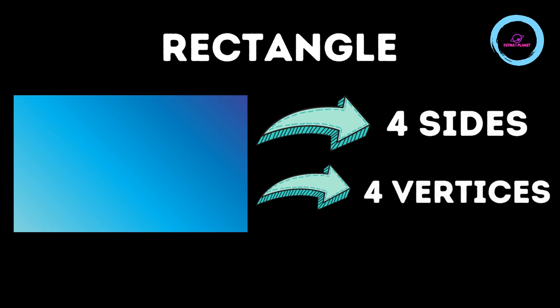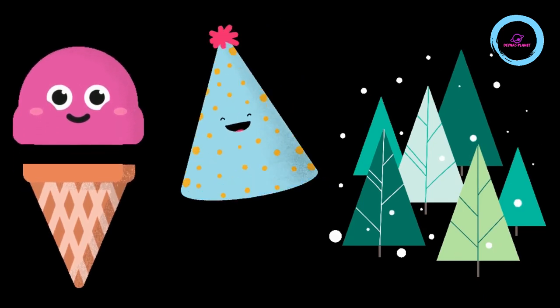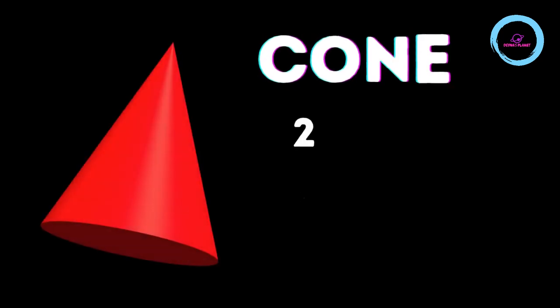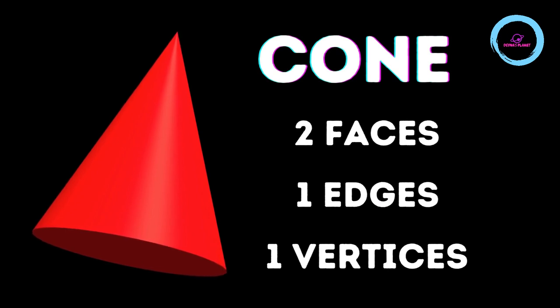A rectangle has four sides and four vortices. This is a corn ice cream. This is a birthday cap. And these are Christmas trees. So what's common in all these? They are all corns. A cone has two faces, one edge and one vortices.